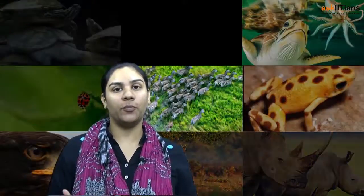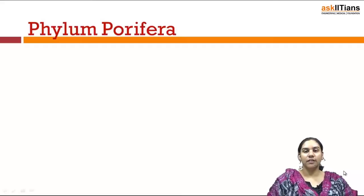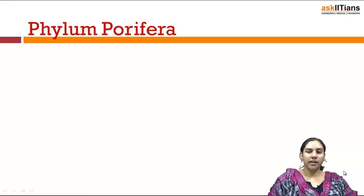We now move on our discussion towards the first high-level grouping of kingdom Animalia, that is the phylum Porifera. These are the simplest organisms present on the entire earth — they have a cellular level of organization. Phylum Porifera includes sponges, which have a cellular level of organization, are radially symmetrical animals, and are diploblastic animals also.